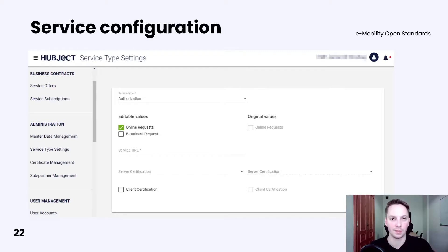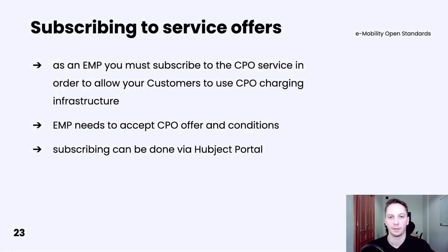As you can see in this example, the authorization service may have an option to specify whether you would like to process requests in online mode. From an EMP perspective, you would like to subscribe to service offers — in other words, have some kind of contract between you and the CPO in order to start using the recharging infrastructure and offer it to your customers.